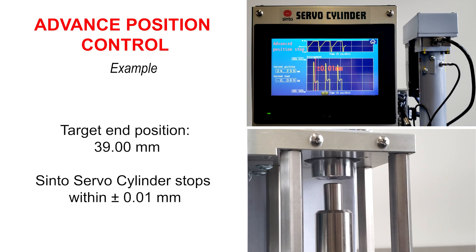From its home position, the cylinder is programmed to advance to a position of 39.00 mm, then return. Notice within the bottom graph, the stop position of the Cinto servo cylinder is repeatable to plus or minus 0.01 mm or less.